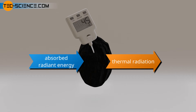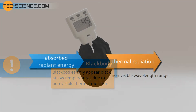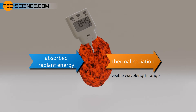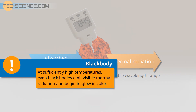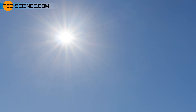A blackbody can and will emit radiation very well. But under normal conditions at not too high temperatures, this emitted radiation lies in the non-visible wavelength range as infrared radiation. The object therefore appears black to the eye, which is why it is called a blackbody. Only if the temperature is increased very strongly and the body starts to glow is radiation in the visible wavelength range emitted. Even if the body now has a color depending on the temperature, it is still called a blackbody by definition, since all incident radiation is still absorbed. So a blackbody does not necessarily have to be black — an impressive example is the sun, which is an almost perfect blackbody, appearing white-glowing due to its enormous temperature of 5,778 Kelvin.